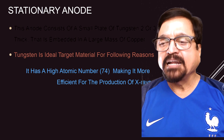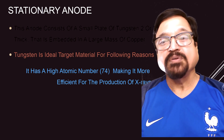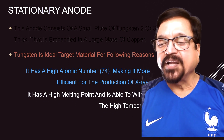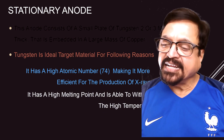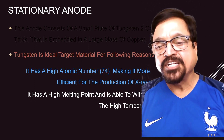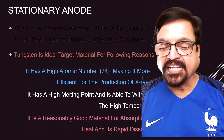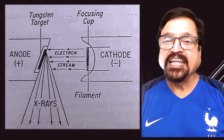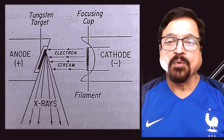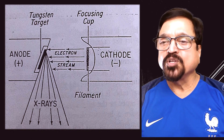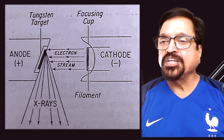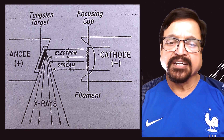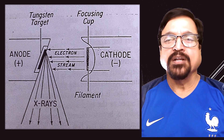Tungsten is the ideal target material for the following reasons. It has a high atomic number of 74, making it more efficient for the production of X-rays. It has a high melting point and is capable of withstanding the temperatures generated. It is also a reasonably good material for absorption and rapid dissipation of heat, and copper provides additional help. Here we can see the anode of tungsten and the cathode which is negatively charged, with the focusing cup streamlining the electrons so they bombard the tungsten target and the energy is converted into X-rays.